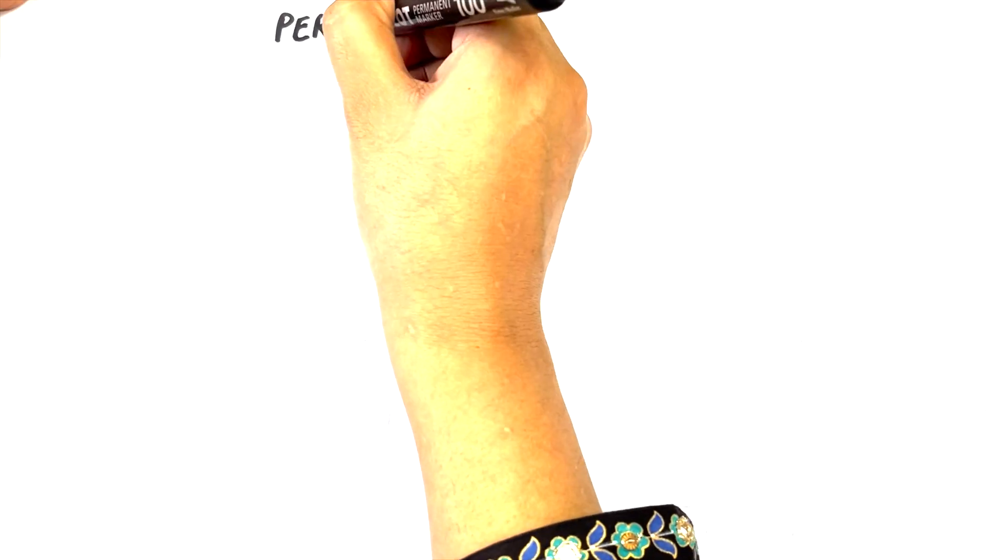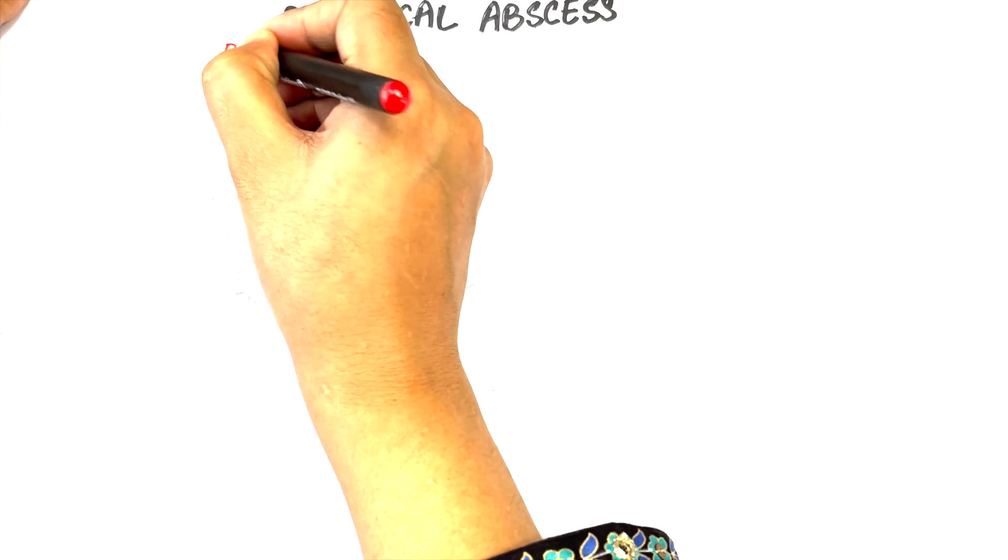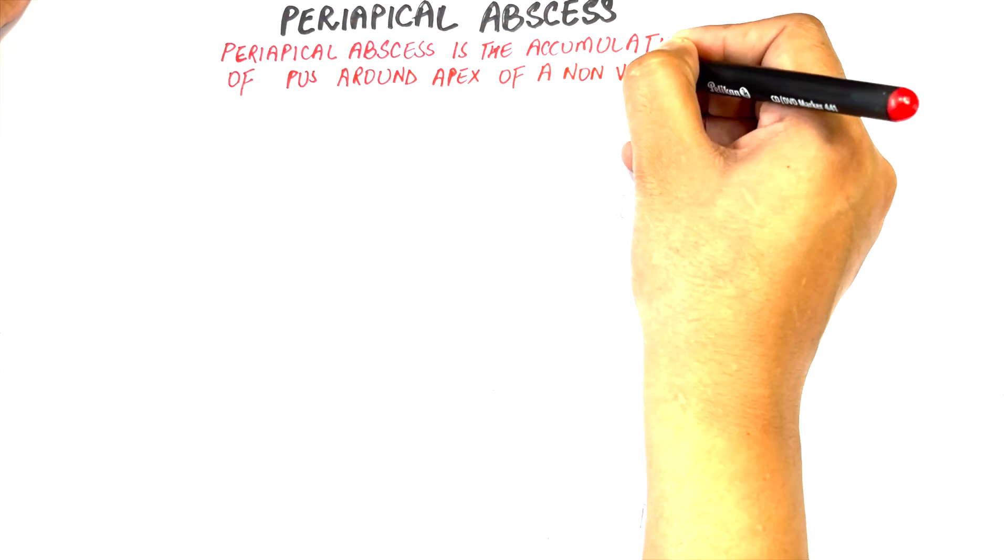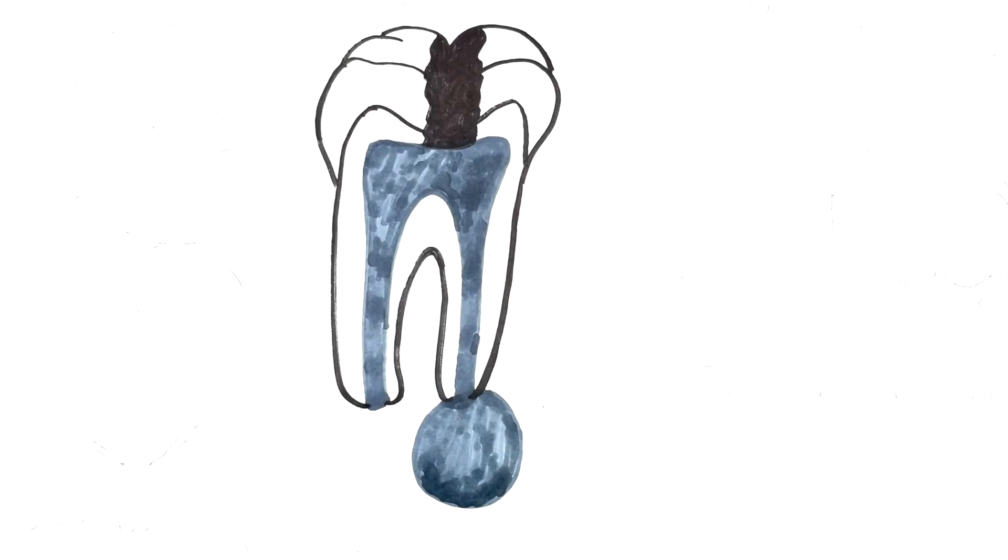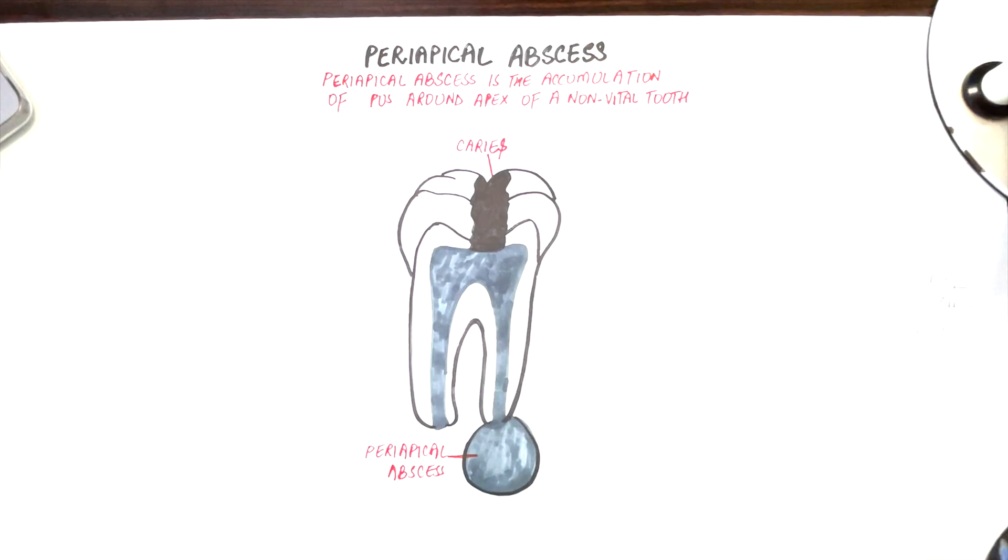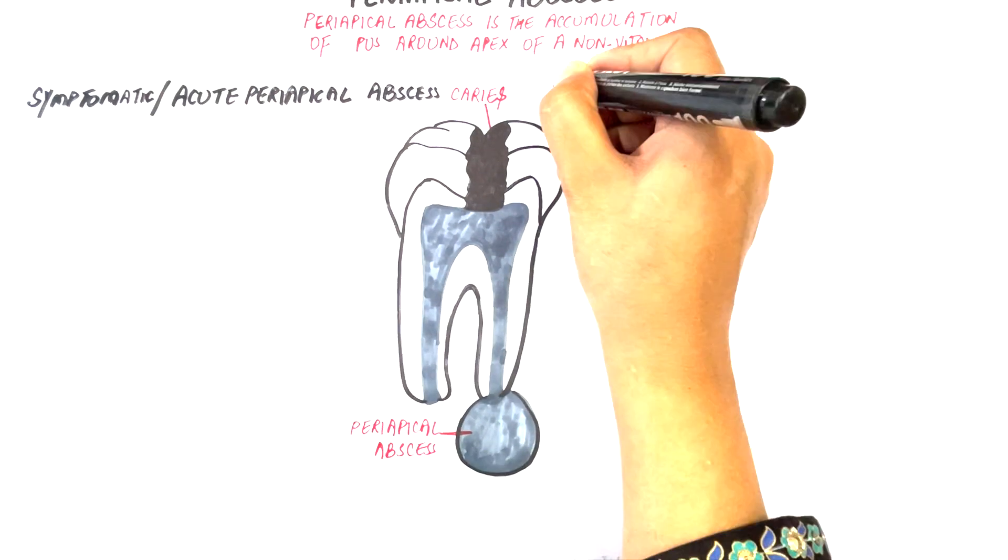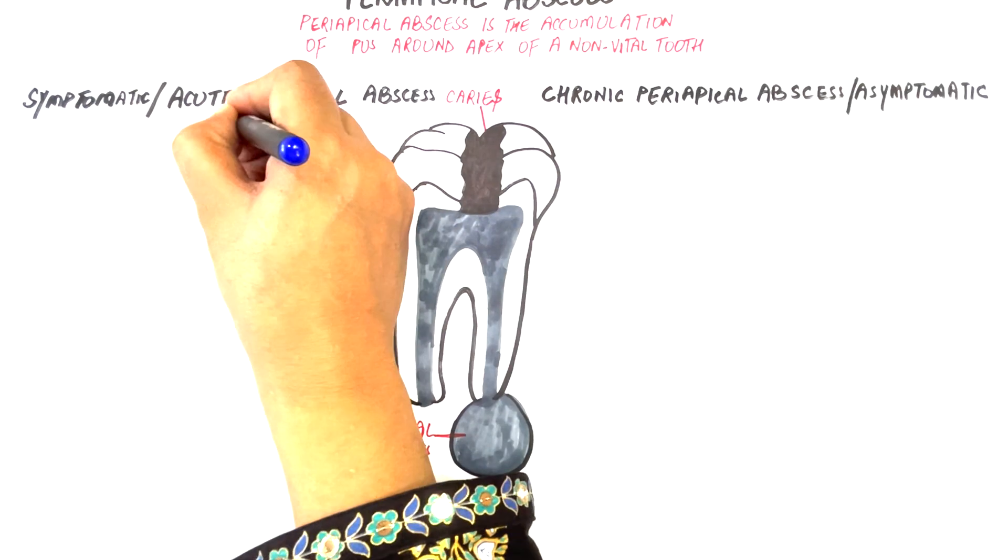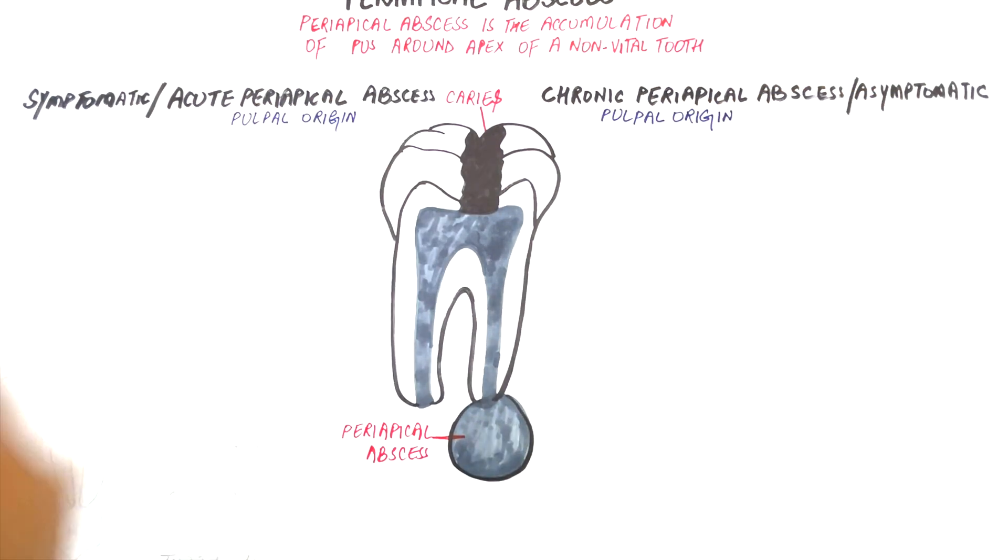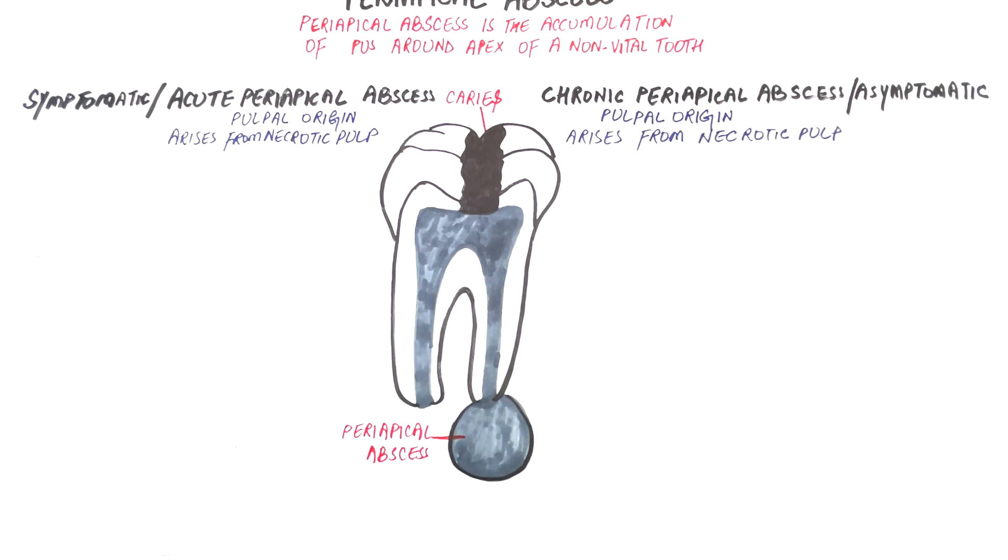An abscess is a cavity filled with pus caused by an infection. A periapical abscess is the accumulation of pus around the root apex of a non-vital tooth. A periapical abscess can be acute or symptomatic and chronic or asymptomatic. Both acute and chronic periapical abscess have a pulpal origin and arise from a necrotic pulp whose irritants have traveled into the periapical tissues.